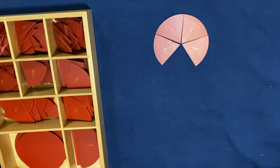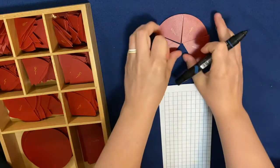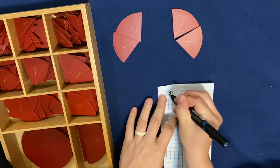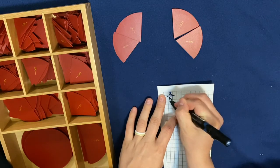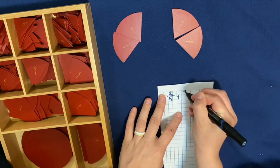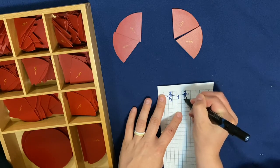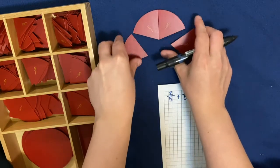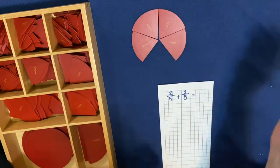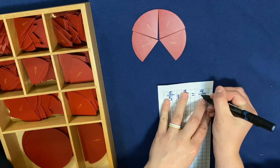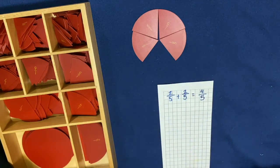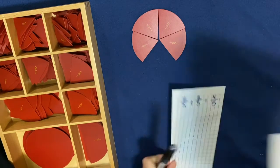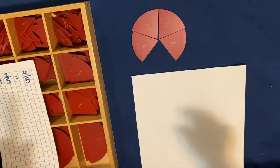So let me show you how we can write this down. I would write it like this. Two-fifths plus two-fifths equals, and when we put it together, it equaled four-fifths. We can also do some tracing of this. Let me show you how we can do that.